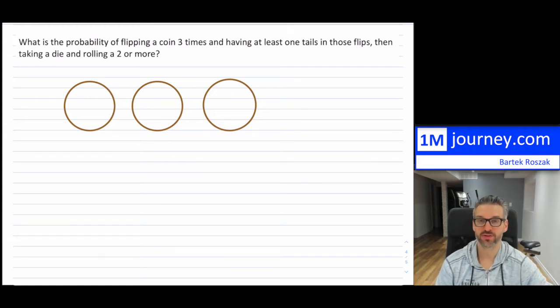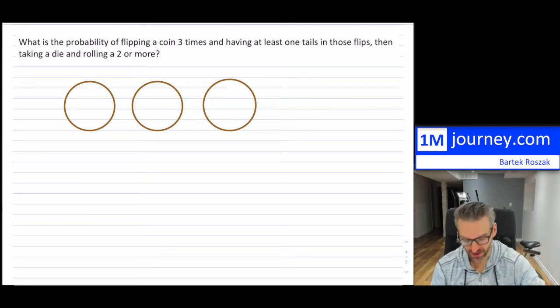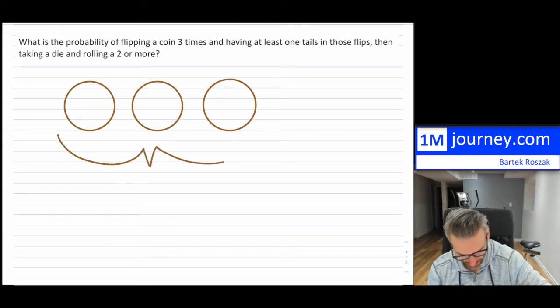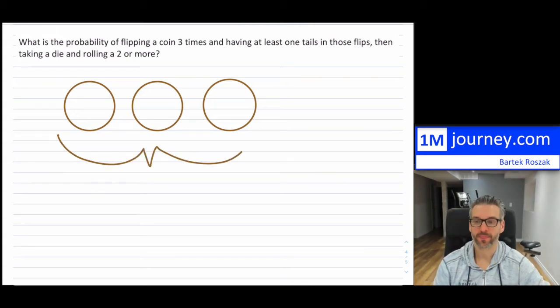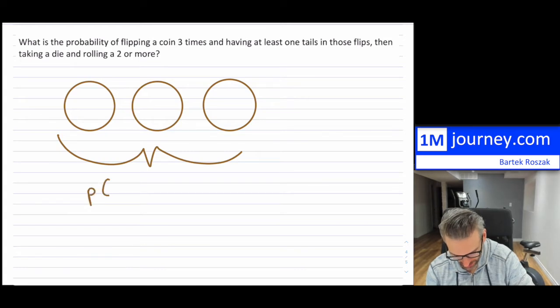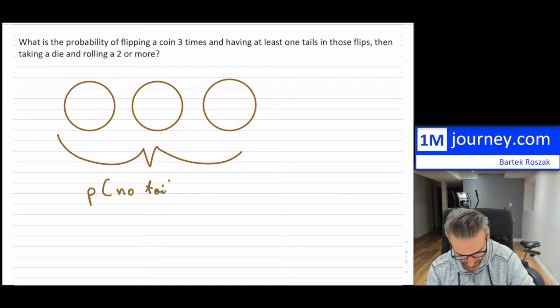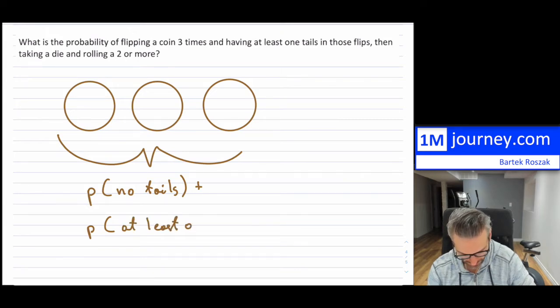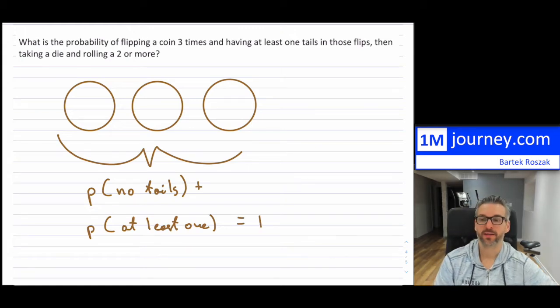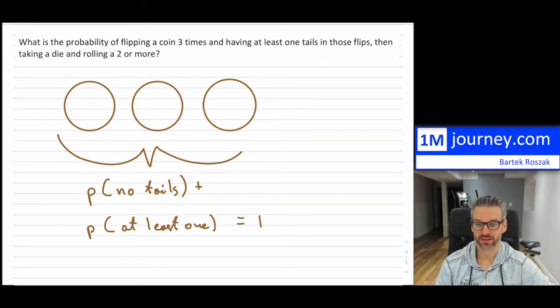With questions with probability where it says at least one, the easiest thing to do is to calculate the probability by using complements. So we know that the probability of no tails plus the probability of at least one tail, that is equal to one, because the total probability has to be 100%.